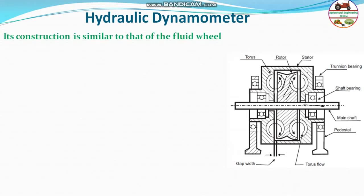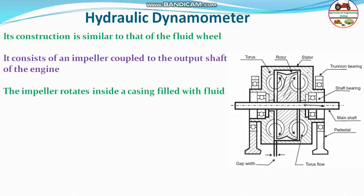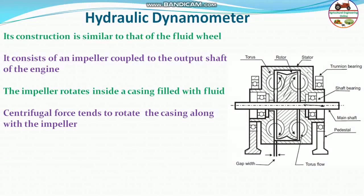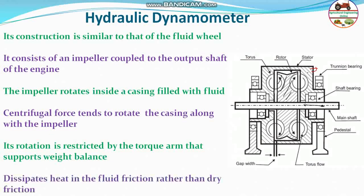The hydraulic dynamometer is similar to the eddy current dynamometer but uses fluid. It consists of an impeller coupled to the output shaft of the engine, rotating inside a casing filled with fluid. Due to the centrifugal force developed by the rotating impeller, the casing also tends to rotate. Its rotation is restricted by a torque arm with a weight balance, from which the torque generated by the transmission system can be calculated. Heat generated is dissipated through the liquid system.